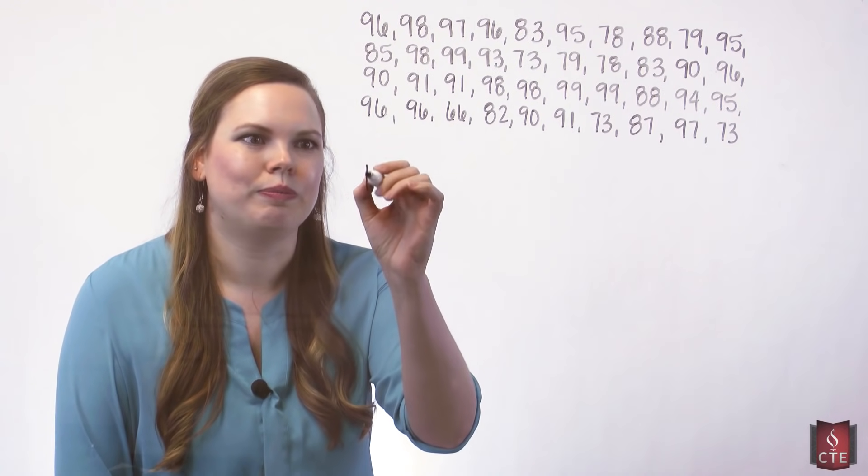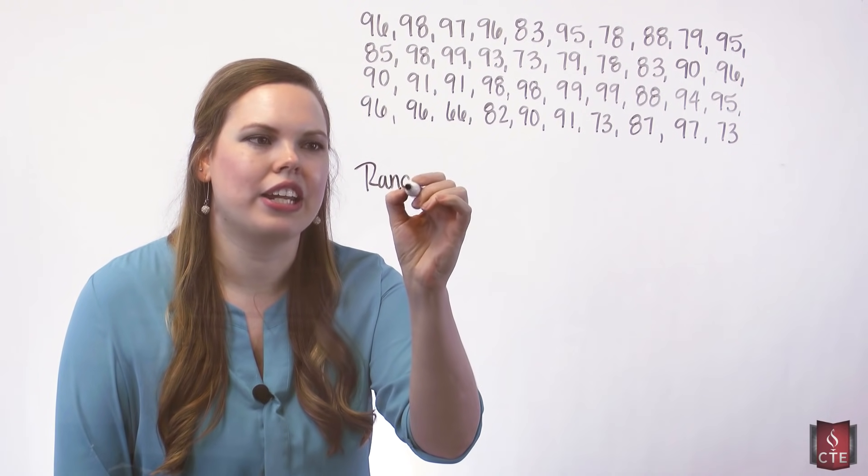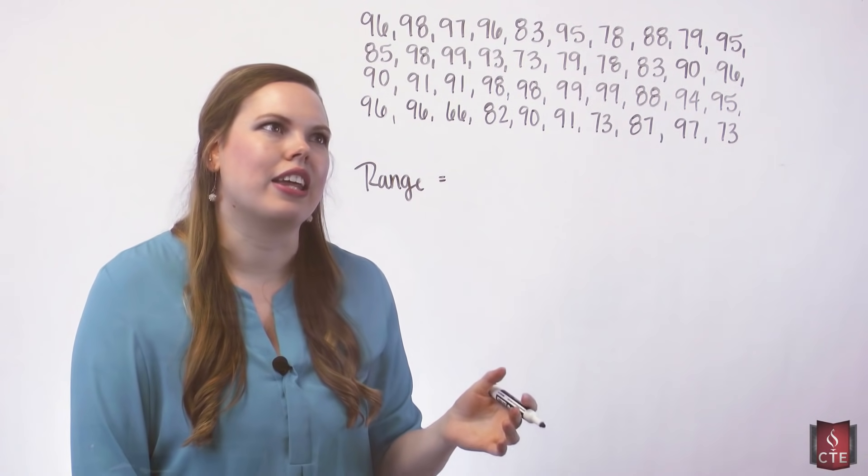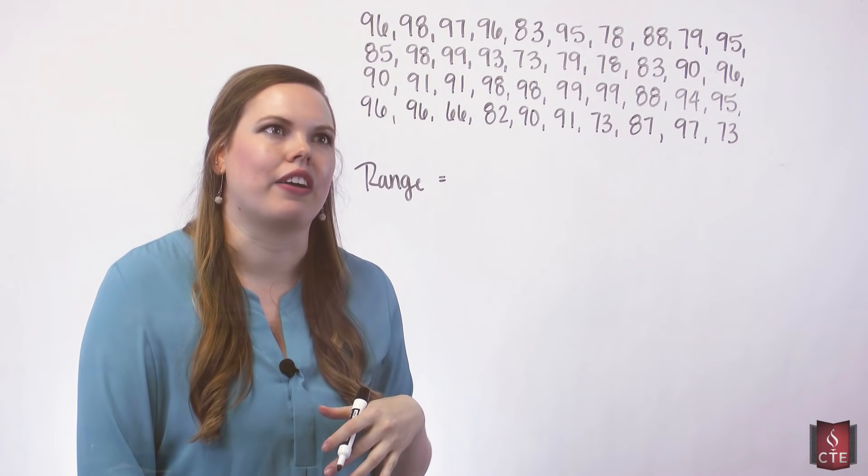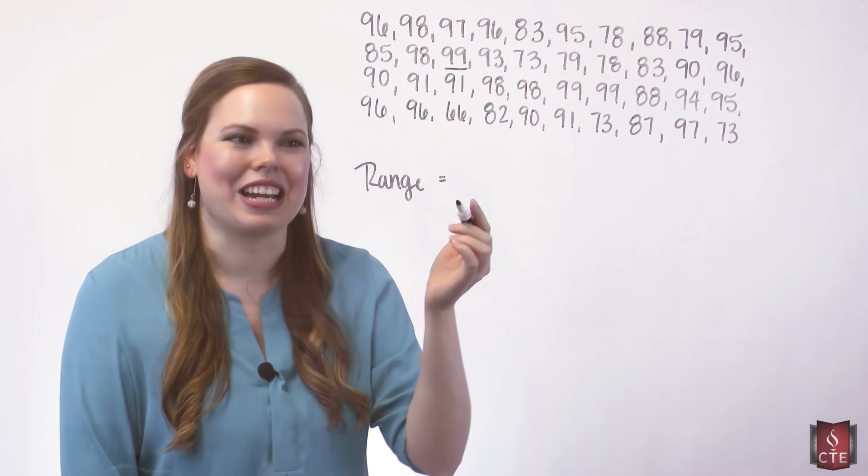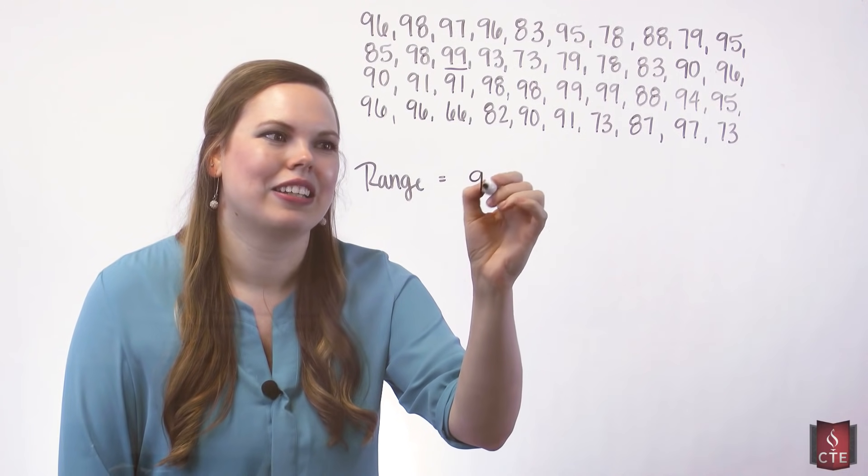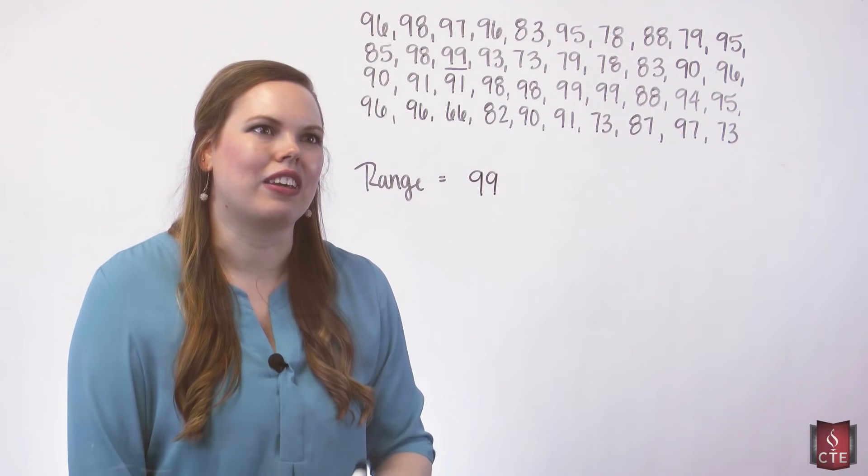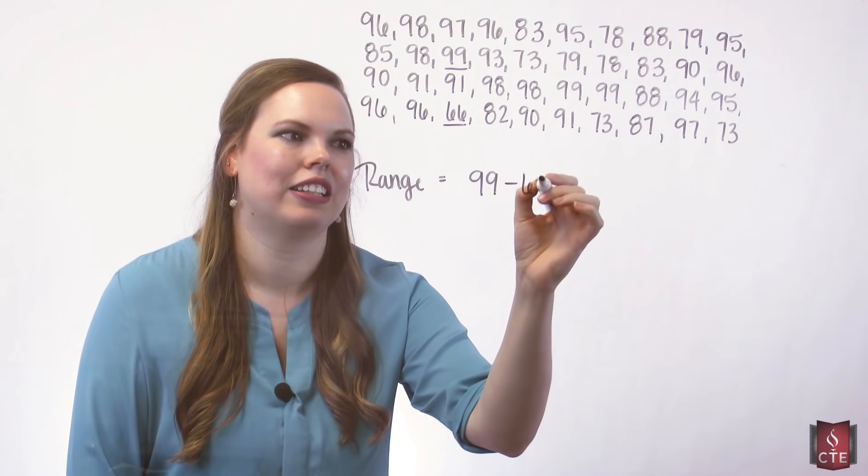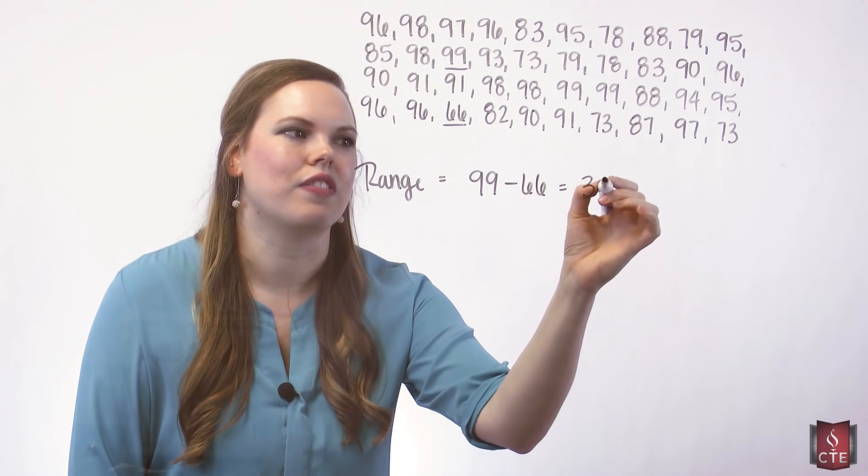So, let's find the range. The range is the difference between the highest data value and the smallest data value. Our highest data value should be 99 because this was in 1999 when we collected the pennies. Our lowest value is right here, it's 66. So we have a range of 33.